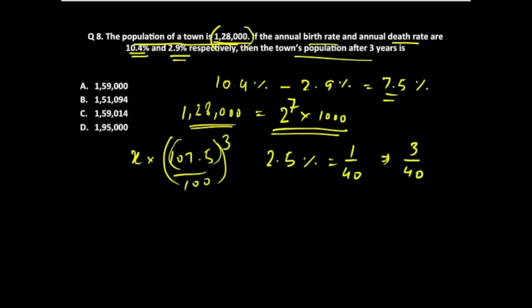By adding it to the original value, this becomes 1 plus 3 by 40. Since we are multiplying it by any number called X here, X would be this thing, 2 power 7 into 1000. So this would become 43 by 40, and since it is acting for three years, we'll have to be cubing it.